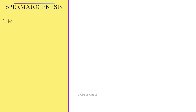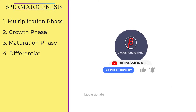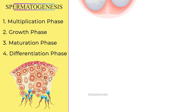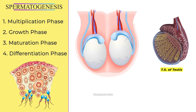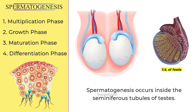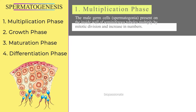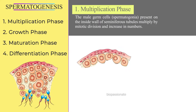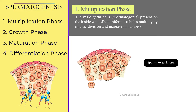Spermatogenesis consists of four phases: multiplication phase, growth phase, maturation phase, and differentiation phase. All phases occur inside the seminiferous tubules of the testes. During the multiplication phase, the male germ cells — diploid spermatogonia — present on the inside wall of the seminiferous tubules multiply by mitotic division and increase in number.